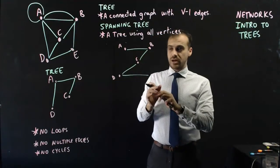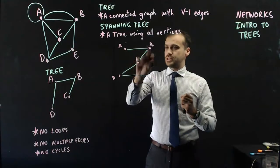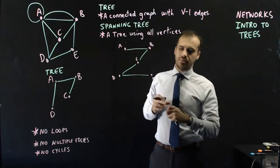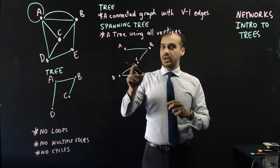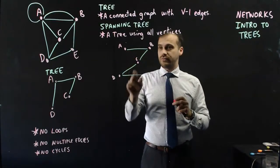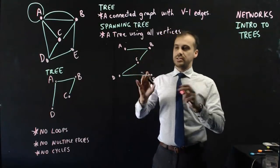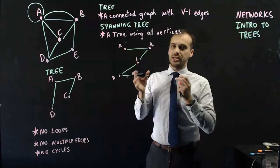Now, is it a connected graph? Yes. Everything is connected up. There's no little islands hanging out by themselves. Are there only four edges because there were five vertices? One, two, three, four. Yes. This is what's called a spanning tree.